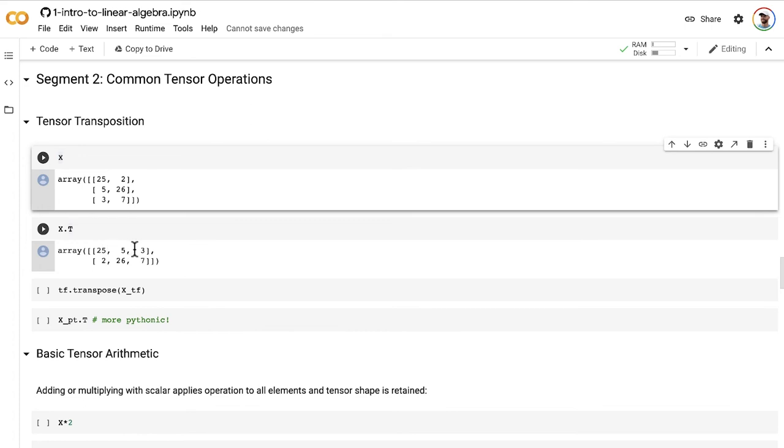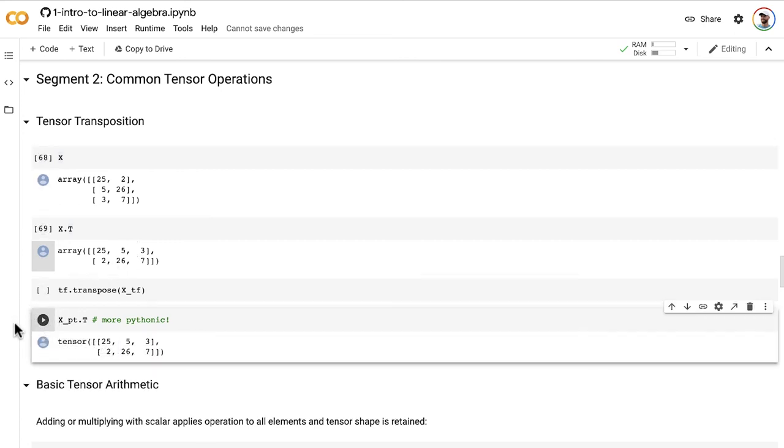To do this in TensorFlow and PyTorch, PyTorch, as usual, is exactly as easy as NumPy. It just has the same dot T operator that you can put on the end there.